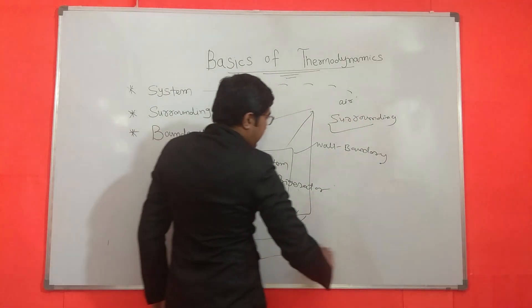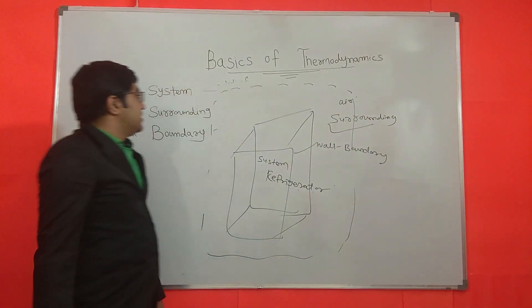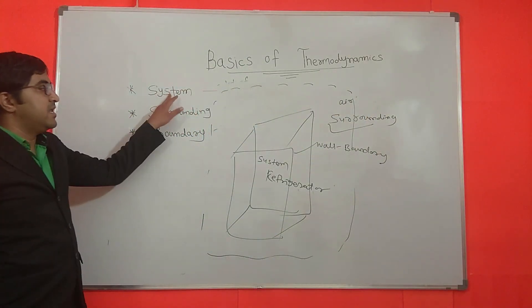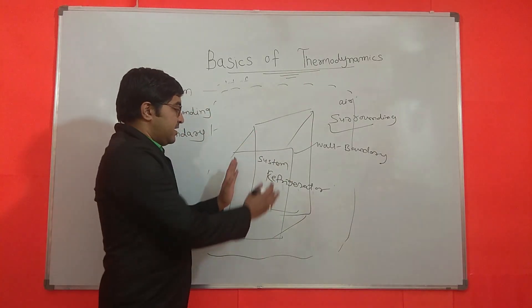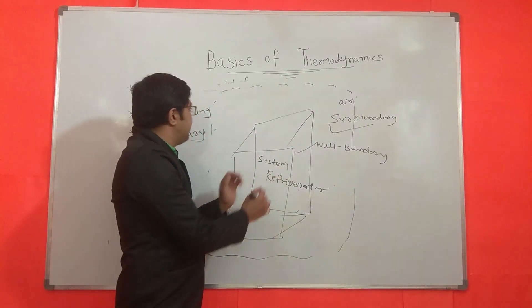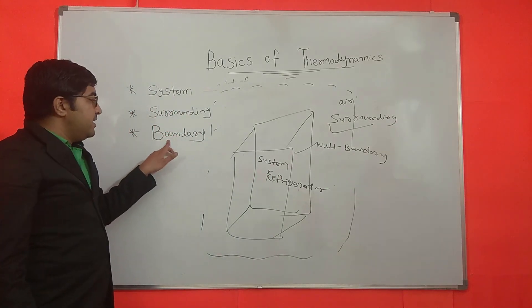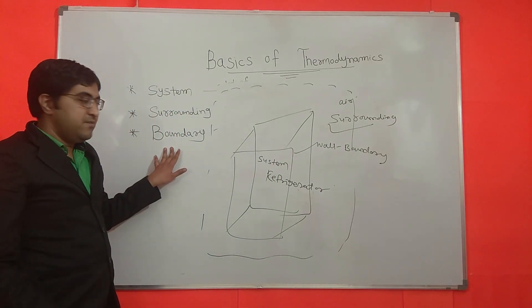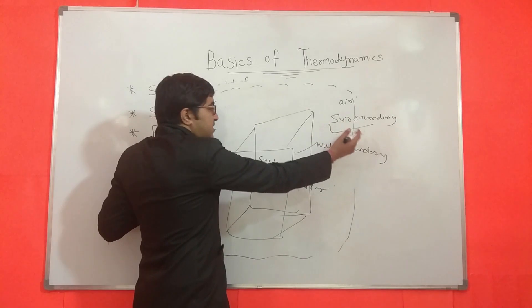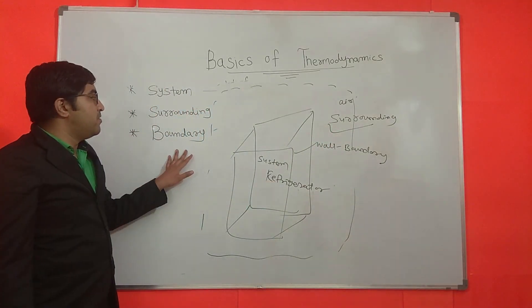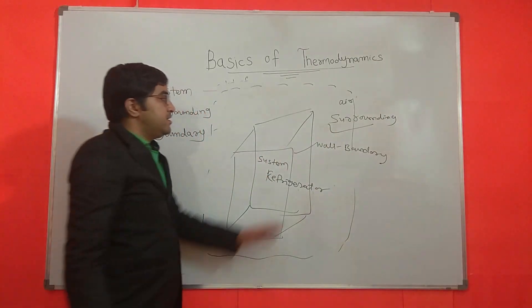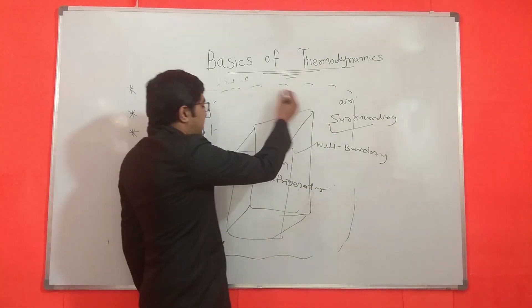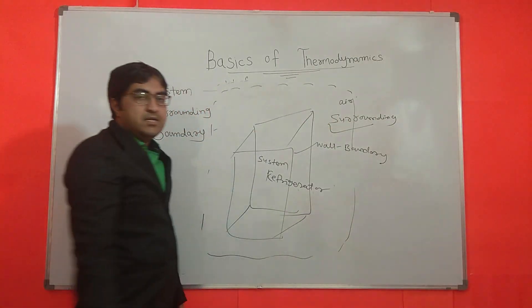To repeat: system means any part of the universe — here we consider the inside cabinet of the refrigerator as our system. Boundary separates the system from the surrounding — it is called boundary. Outside the boundary is called the surrounding, so here the atmosphere, the outside air, is our surrounding.